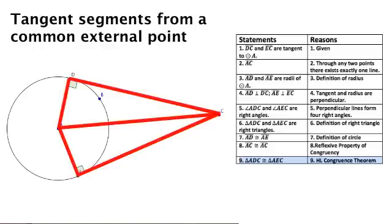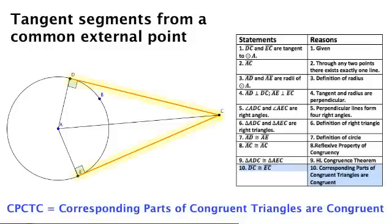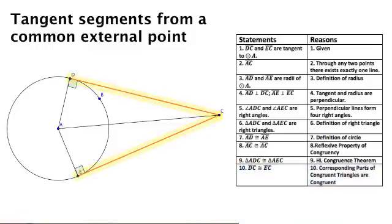And now, through CPCTC, we know that these two segments are congruent. So, our intuition was right. Tangent segments from a common external point are always congruent.